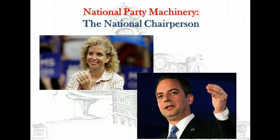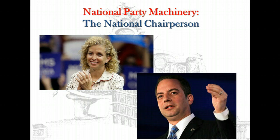In each party, the National Chairperson is the leader of the National Committee. In form, he or she is chosen to a four-year term by the National Committee right after the National Convention. In fact, the choice is made by the just-nominated presidential candidate and is then ratified by the National Committee. The chairperson directs the work of the party's headquarters and its small staff in Washington. In presidential election years the committee focuses on the convention and then the campaign; between elections, the chairperson and committee work to strengthen the party by promoting party unity, raising money, recruiting new voters, and preparing for the next presidential season.